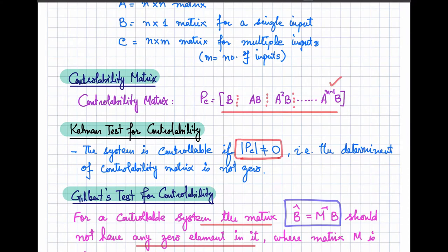Kalman's test is more commonly used because it has no condition on matrix A. The Gilbert test requires matrix A to be represented in canonical form. We have discussed the four canonical forms in the previous videos.